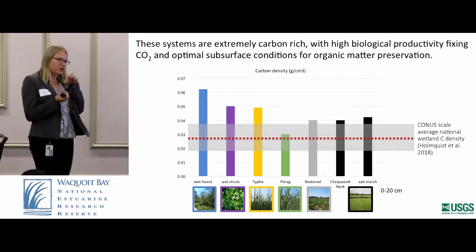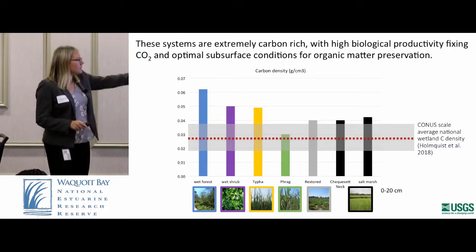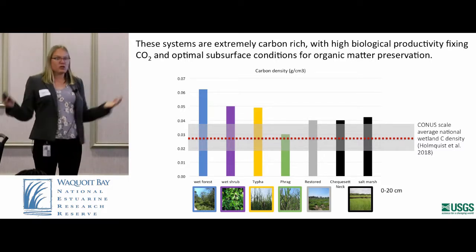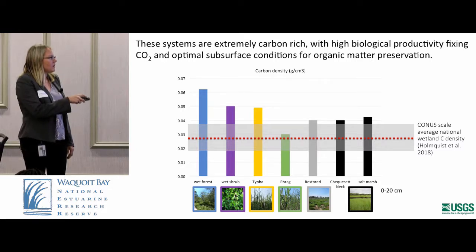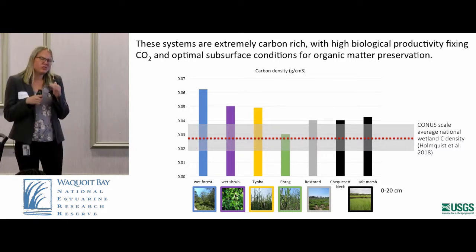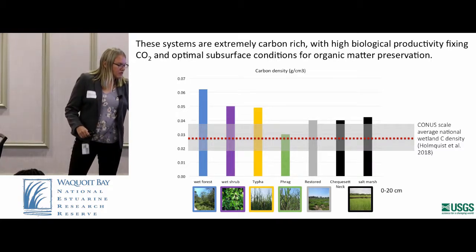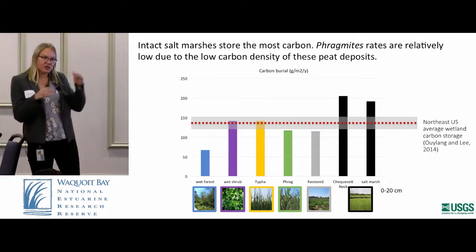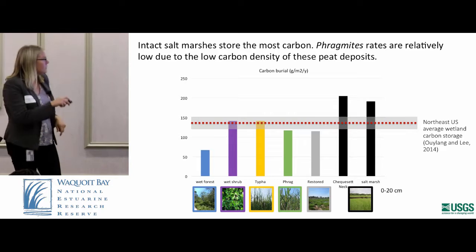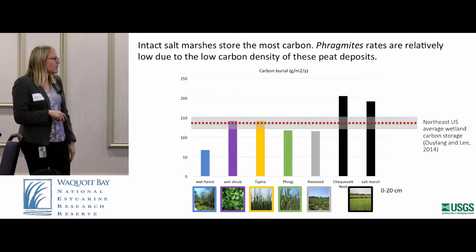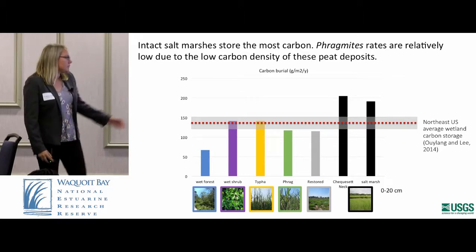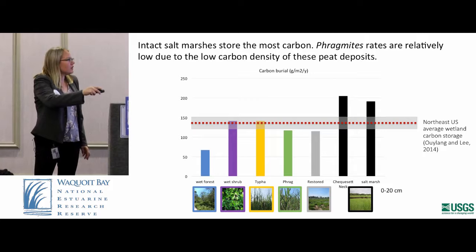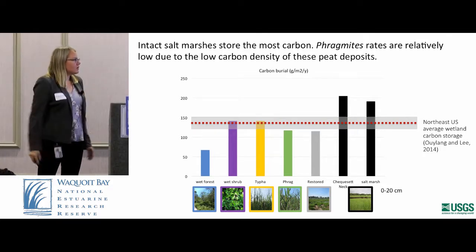Next we look at carbon density — how much carbon is in a certain volume of sediment. Shown in red and gray is a continental U.S. synthesis of coastal wetlands. Most of our sites are on the high end of that range, with some having slightly higher carbon density, which may relate to microbial processes. For the carbon burial number: carbon burial is a function of carbon density in a volume multiplied by how much that volume is increasing. Our natural sites have the highest carbon burial rates; the Phragmites site is a bit lower due to slightly lower carbon density. Our marshes are at the high end of the New England area average carbon burial.